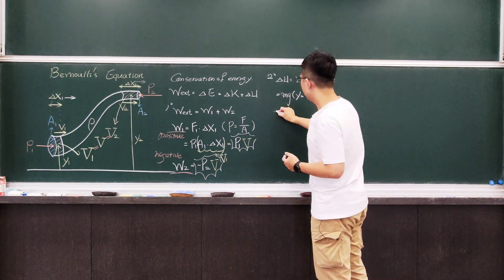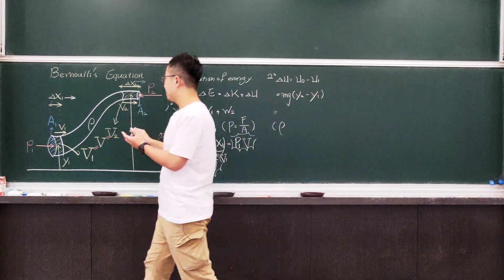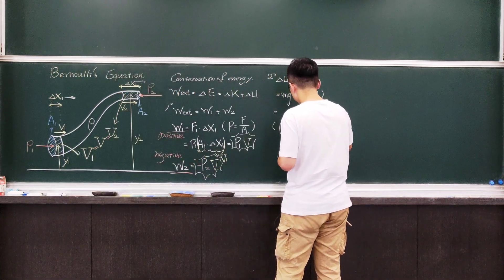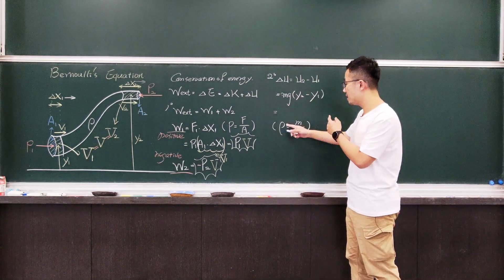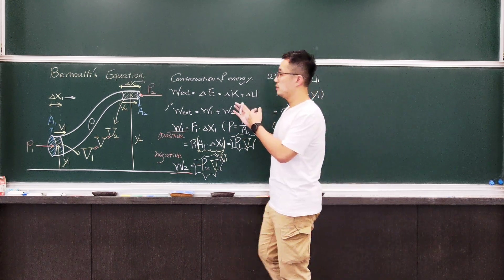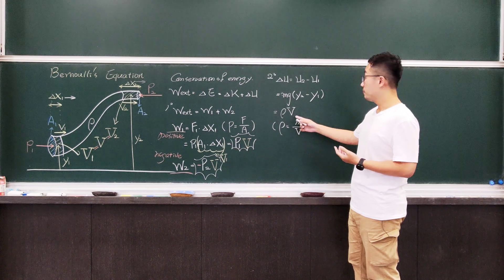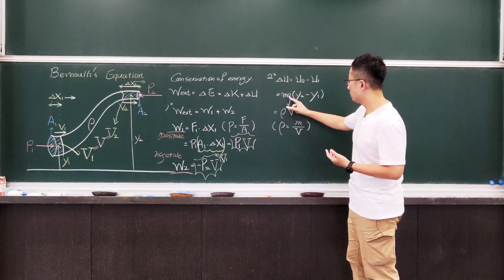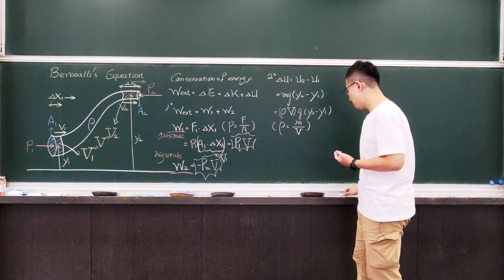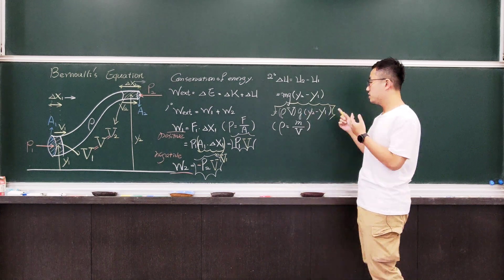The density rho is defined as mass per volume, so I can rewrite the mass as rho times the volume. Since the volume for the portion at point A and point B is totally the same, I can just write V. So the change in potential energy is rho times V times g times (y2 minus y1).